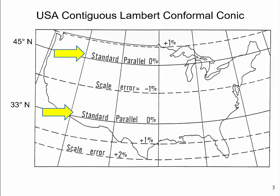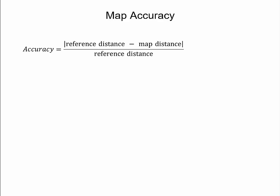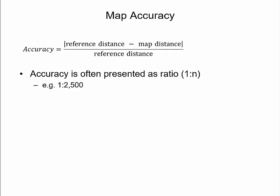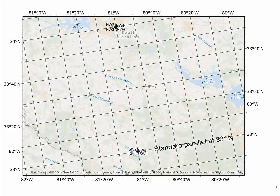Between the standard parallels, distances are mapped too short by up to 1%. Map accuracy is closely related to map distortion since it helps quantify the effect at a given point and in different directions. Map accuracy is found by comparing the length of a line on the reference globe with the length measured on the map. The equation takes the absolute difference between the reference distance on the Earth model, such as the ellipsoid, and the measured map distance, expressed as a ratio — such as 1 over 2500.